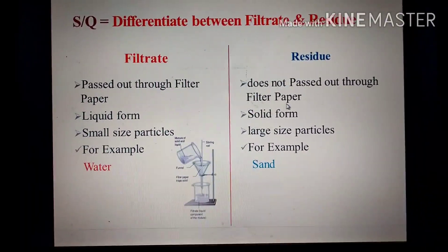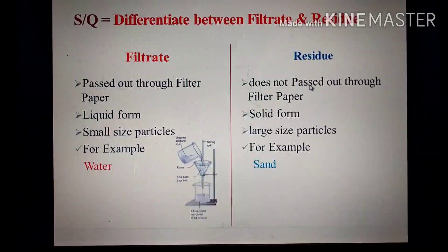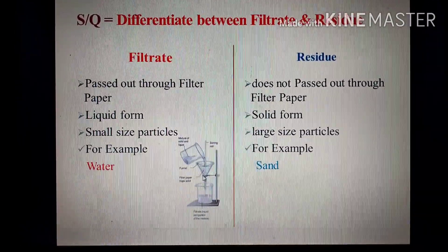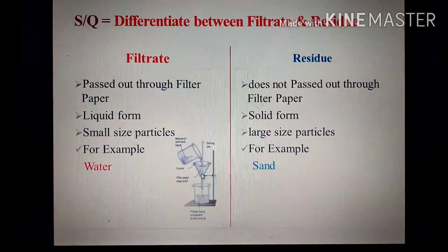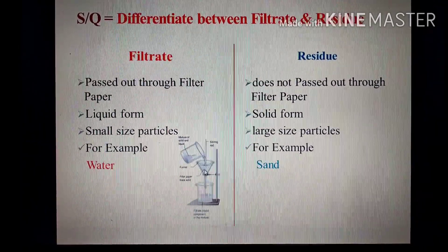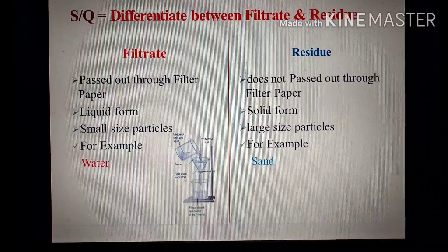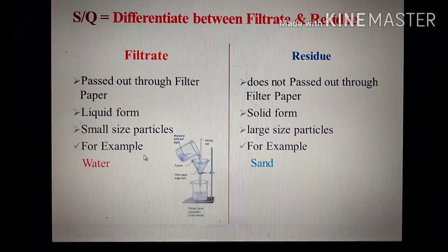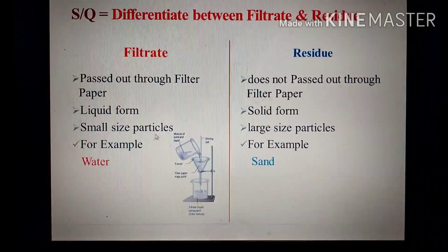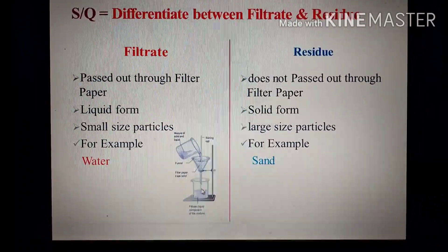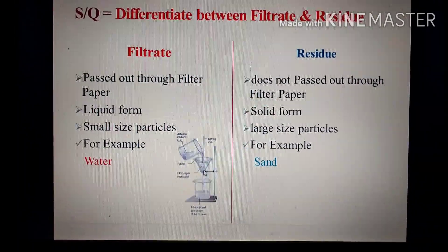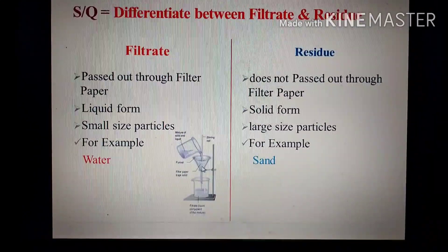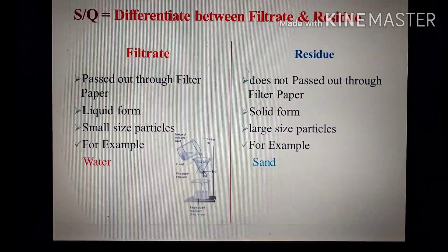جو filtrate ہے وہ liquid form میں ہوتا ہے جیسے یہ نیچے water ہے۔ جب کہ those components that do not pass out through a filter paper، that is known as residue۔ یہ non-insoluble particles جو یہاں پہ stuck ہو کر left behind رہ جاتے ہیں ان کو residue کہتے ہیں۔ Residue solid form میں ہوتا ہے۔ Filtrate example: water؛ residue example: sand — کیونکہ وہ left behind funnel میں filter paper کے اوپر رہ جاتا ہے۔